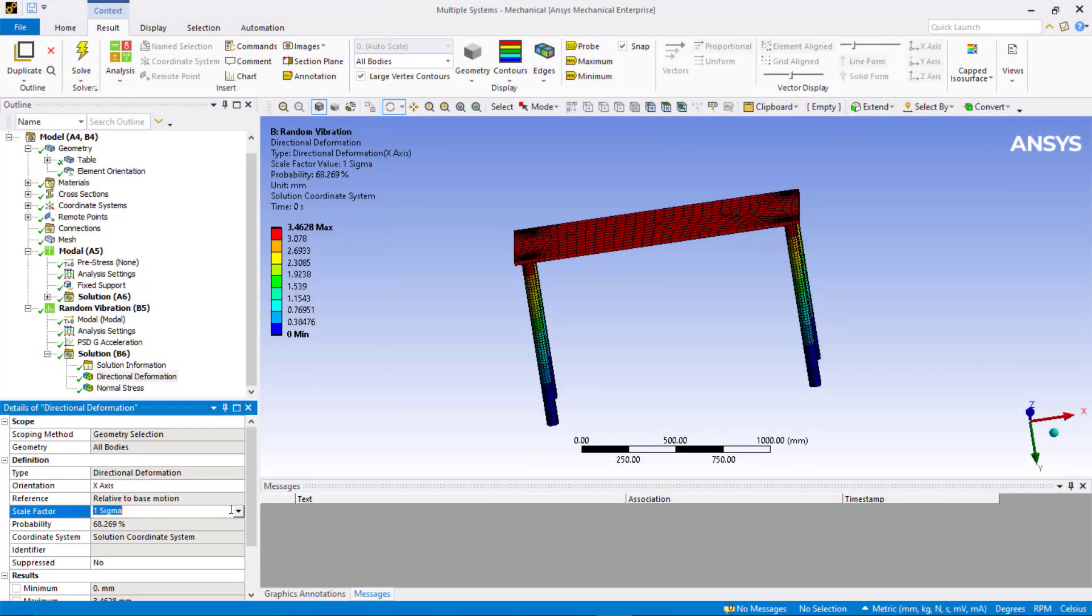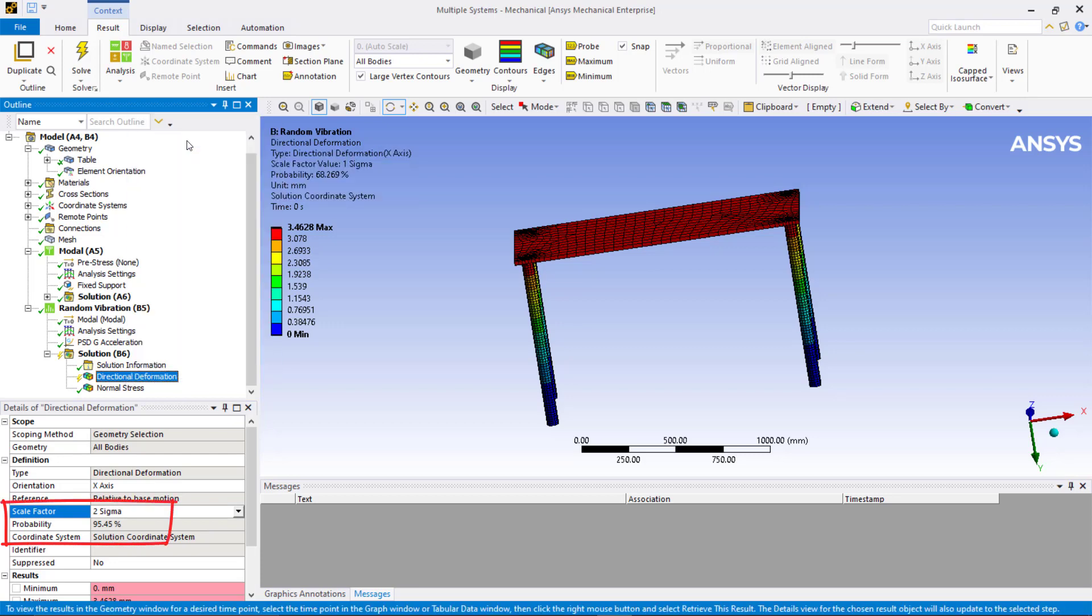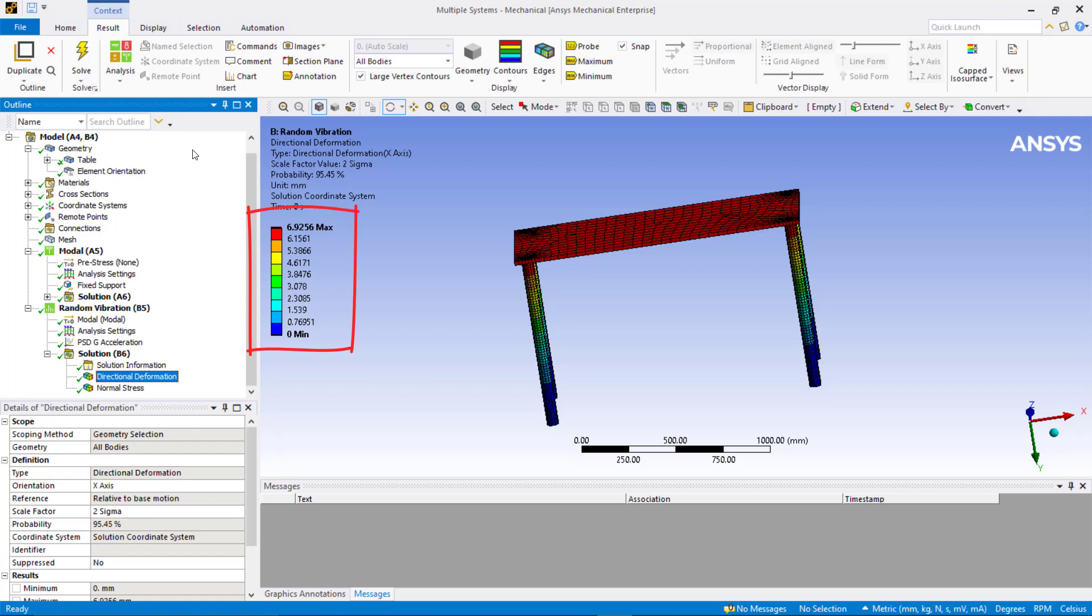If we change the scale factor to 2 sigma value, the results indicate that there is 95.45% probability that the deformation in x-direction will be at or below 6.92 mm.